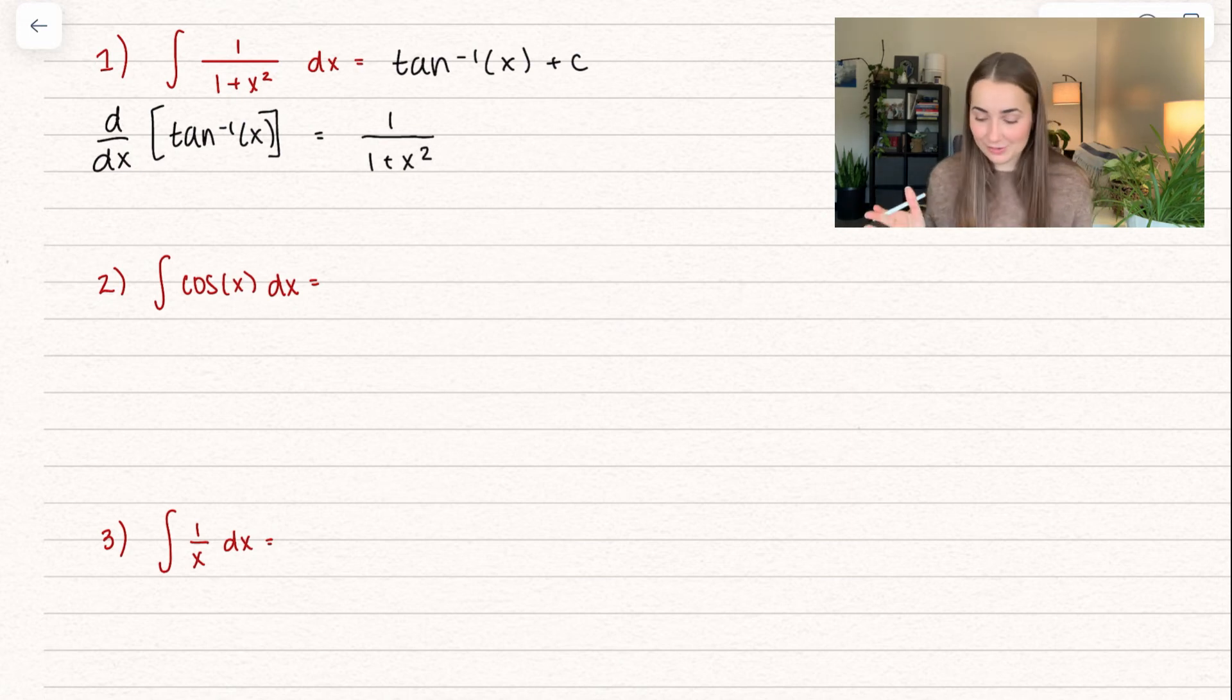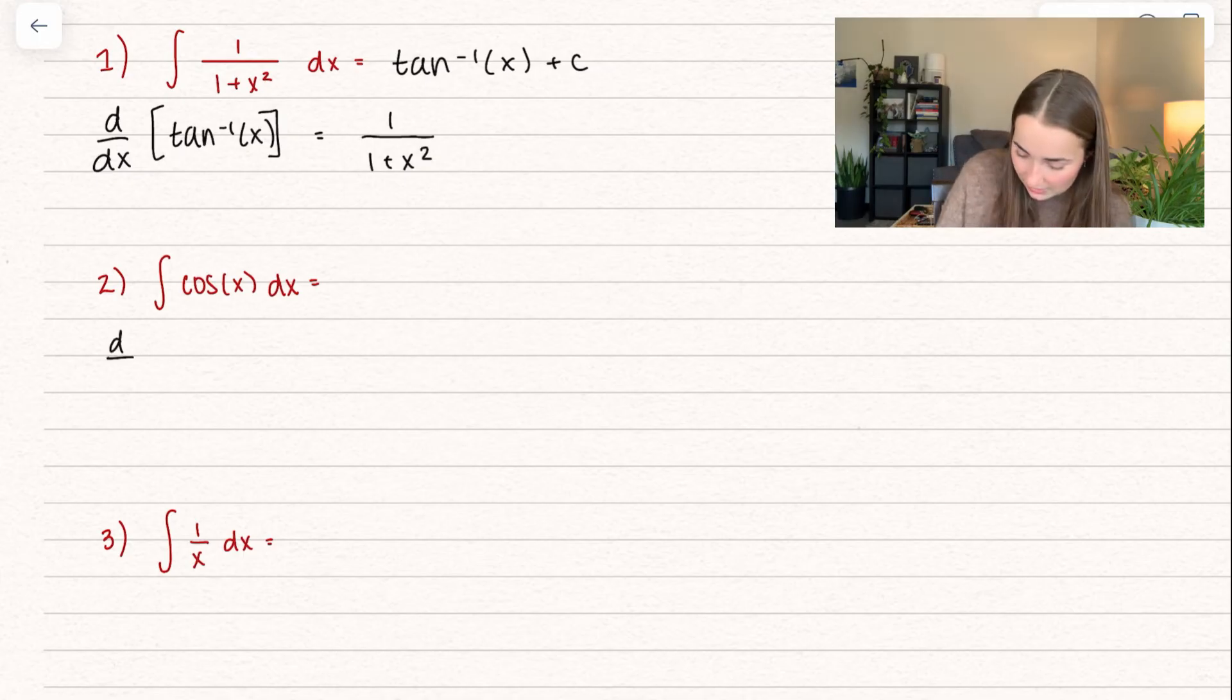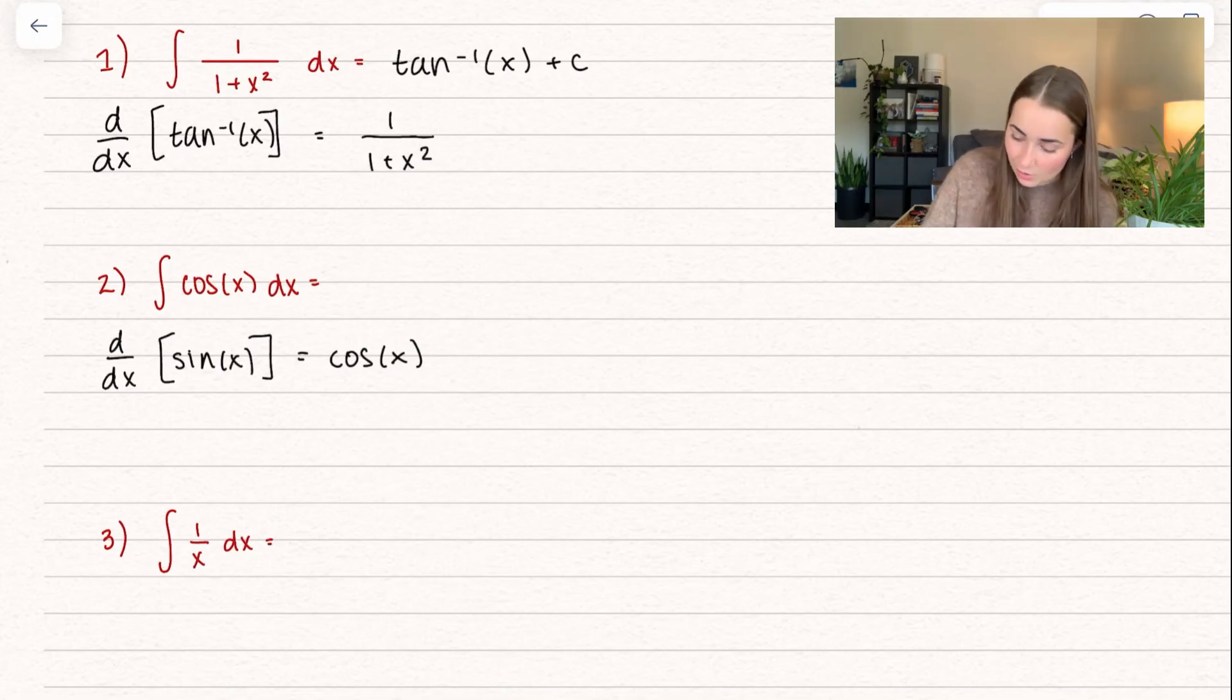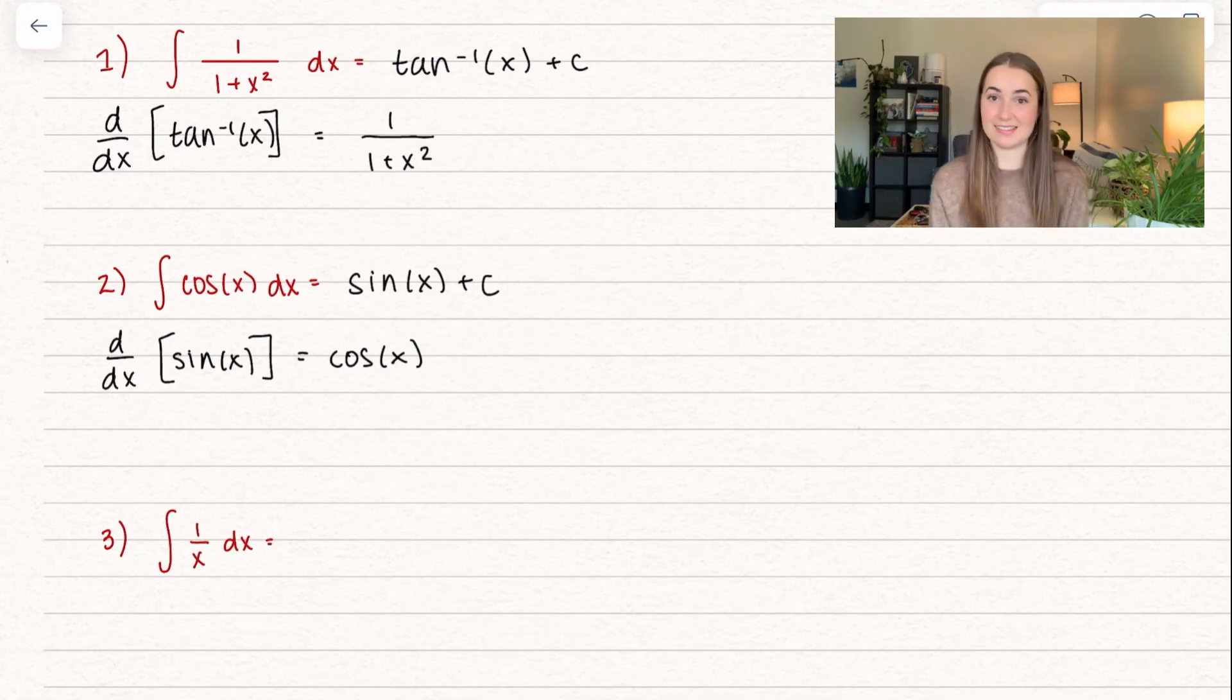Let's go ahead and try another one. So we have the antiderivative of cosine of x in terms of x is equal to something. Let's try to figure out what that something is. So I want to take the derivative of it in order to get cosine of x. And we know that the derivative of sine is equal to cosine of x. So this is almost our solution. We have sine of x, but we have to add on that constant c.